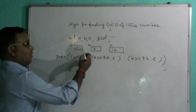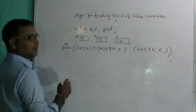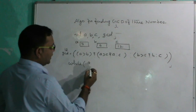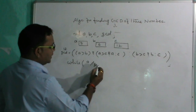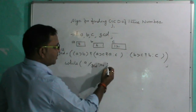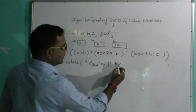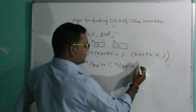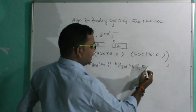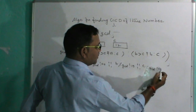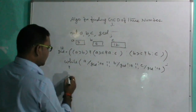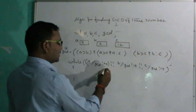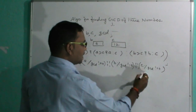According to our example, the largest value is 12. Now we apply the loop. The while condition is: (a % GCD != 0) OR (b % GCD != 0) OR (c % GCD != 0). We are binding three conditions with the OR operator — if any one condition is true, the while loop will execute.